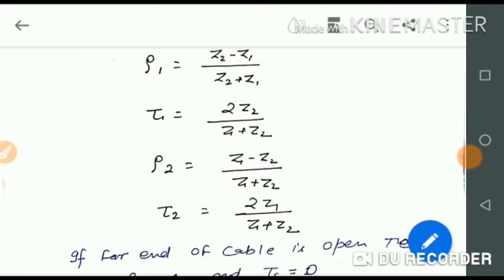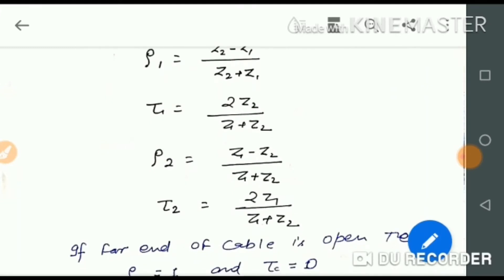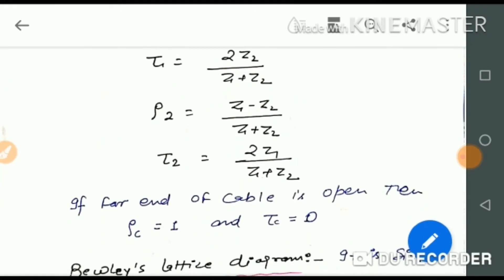τ1 is the line to cable transmission factor, and τ2 is the cable to line transmission factor. Z1 is the surge impedance of the overhead line, and Z2 is the surge impedance of the cable.